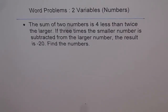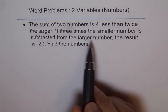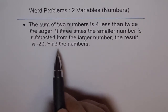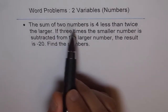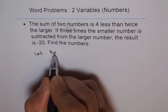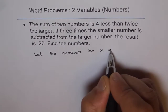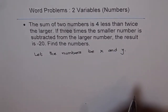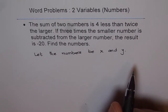Word problems with two variables involving numbers. The question here is: the sum of two numbers is 4 less than twice the larger. If 3 times the smaller number is subtracted from the larger number, the result is minus 20. Find the numbers. The first step is to define the variables. Since the question involves the sum of two numbers, there are two variables. So we say, let the numbers be x and y.